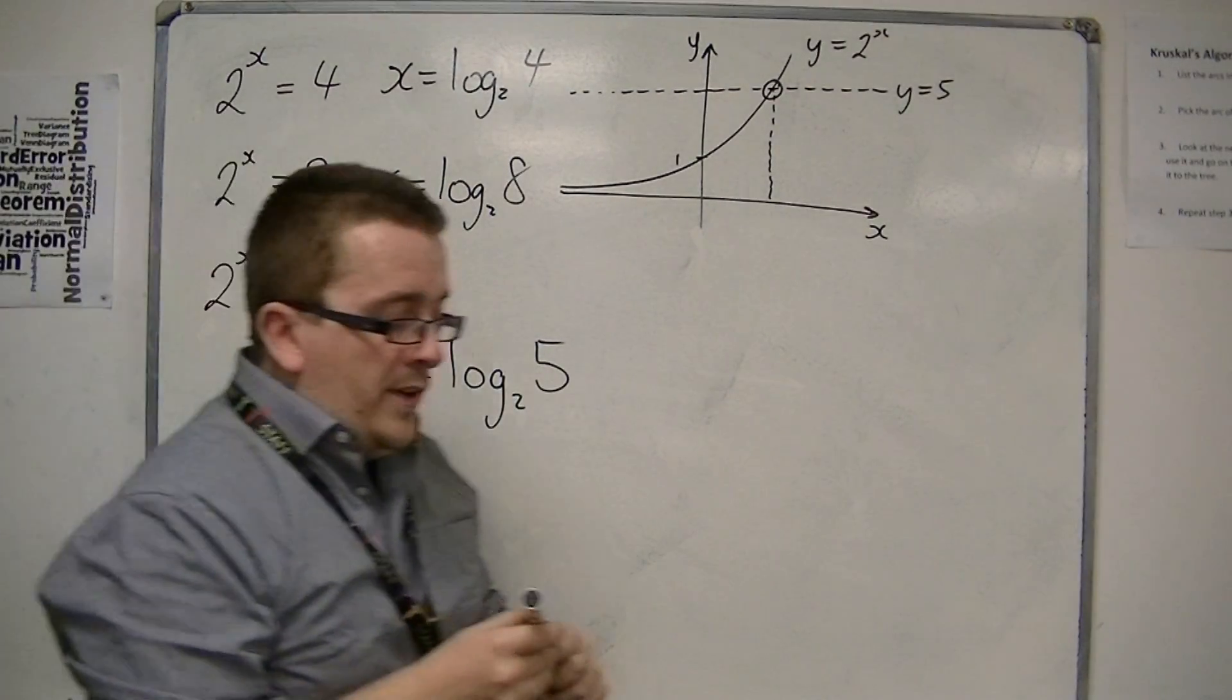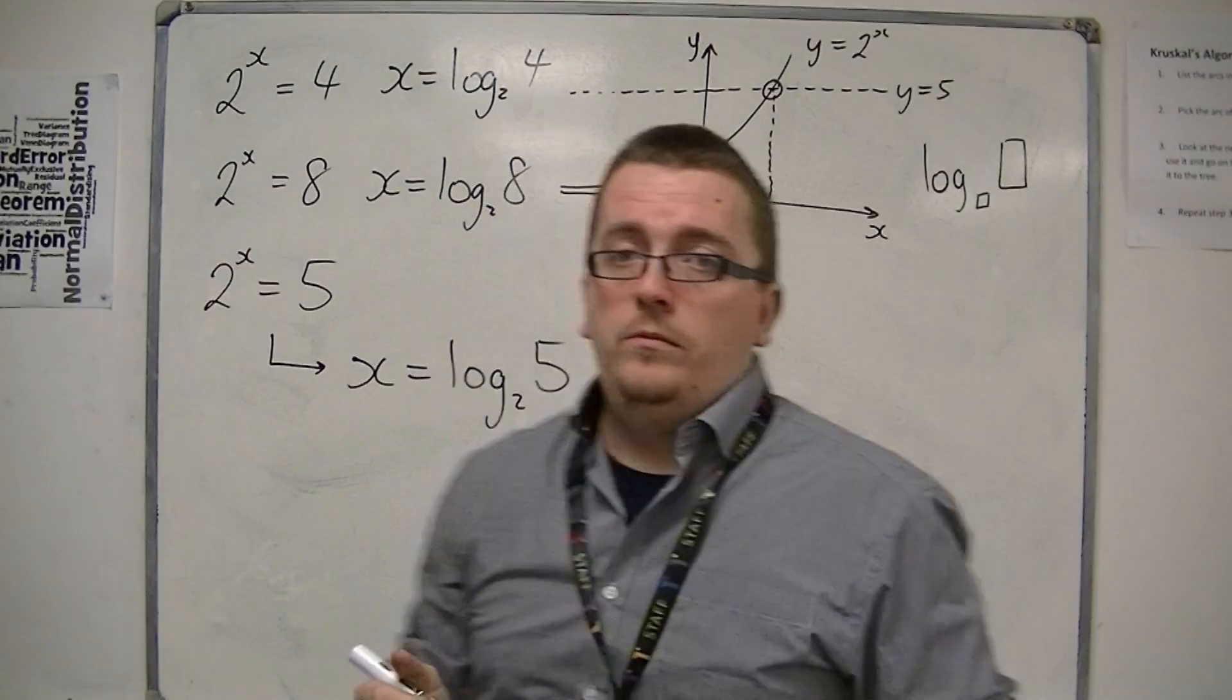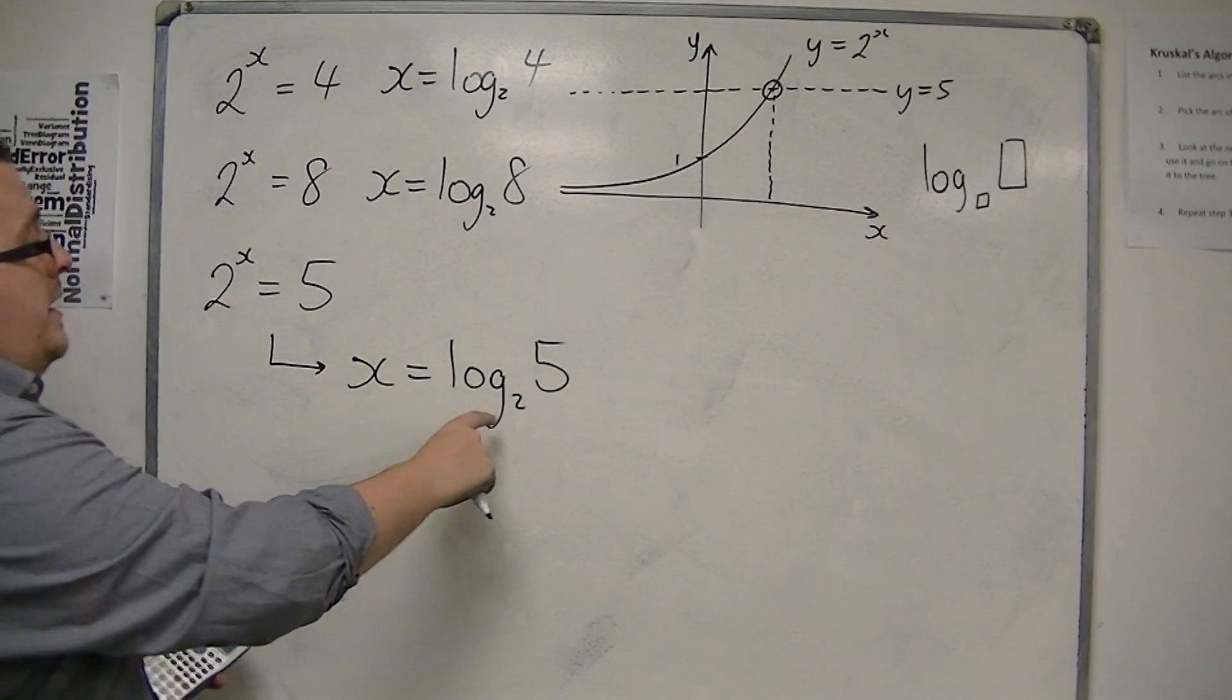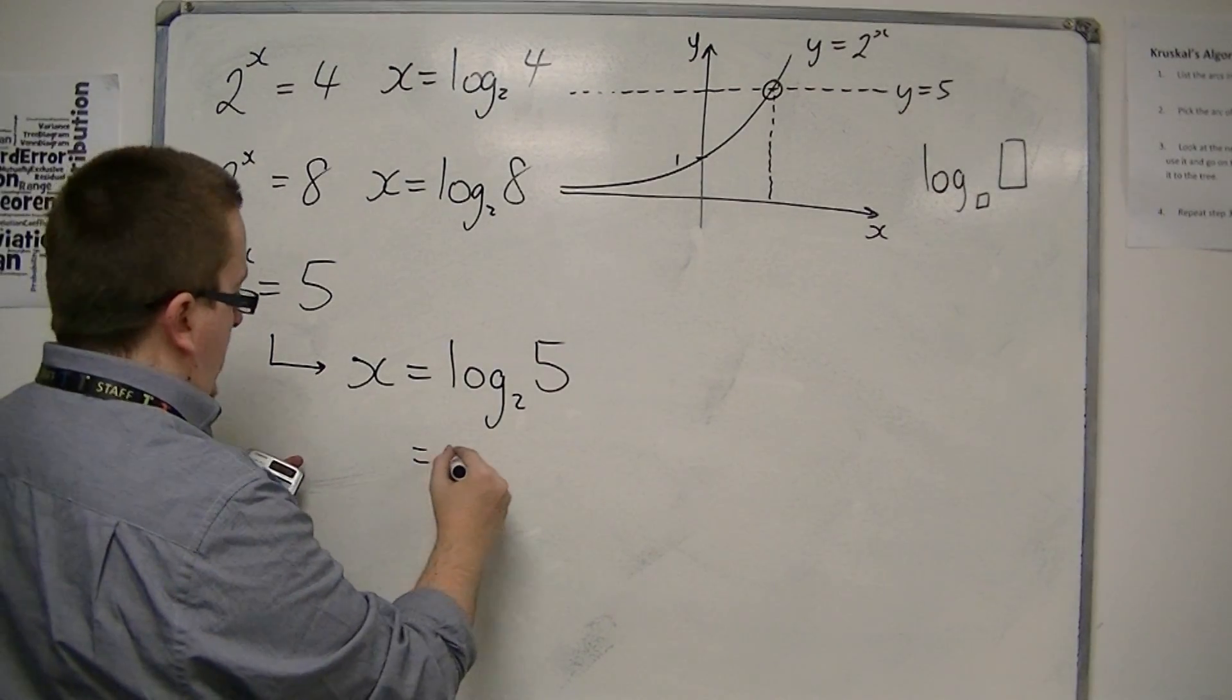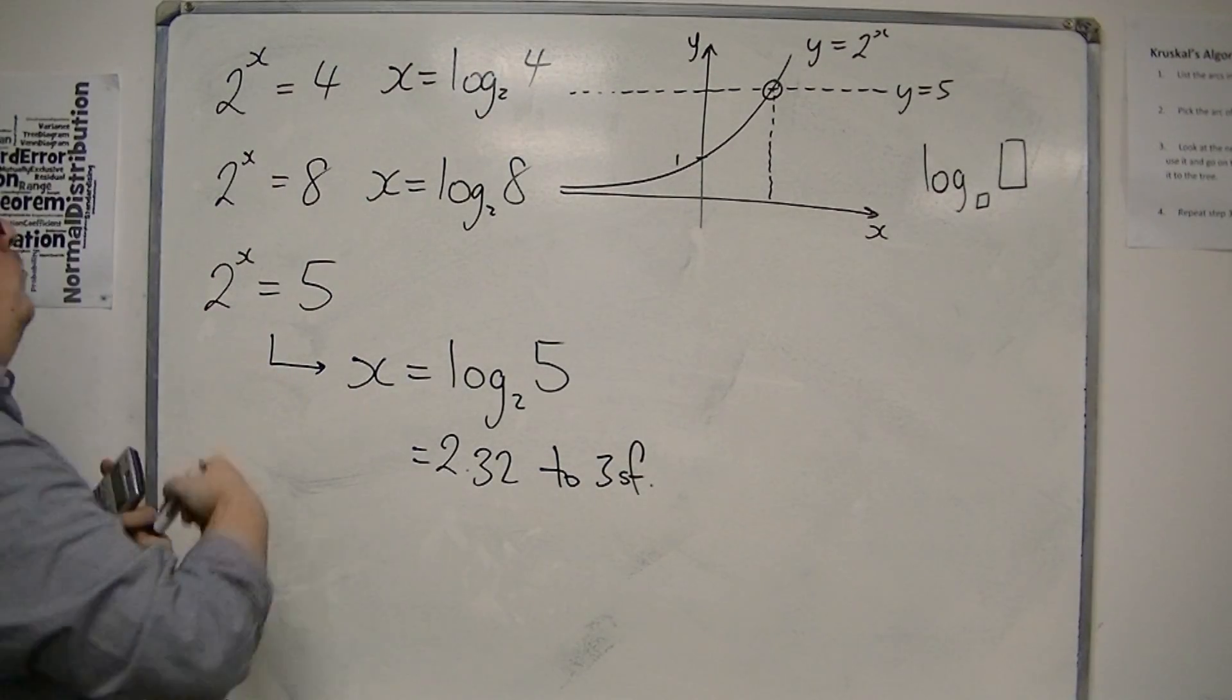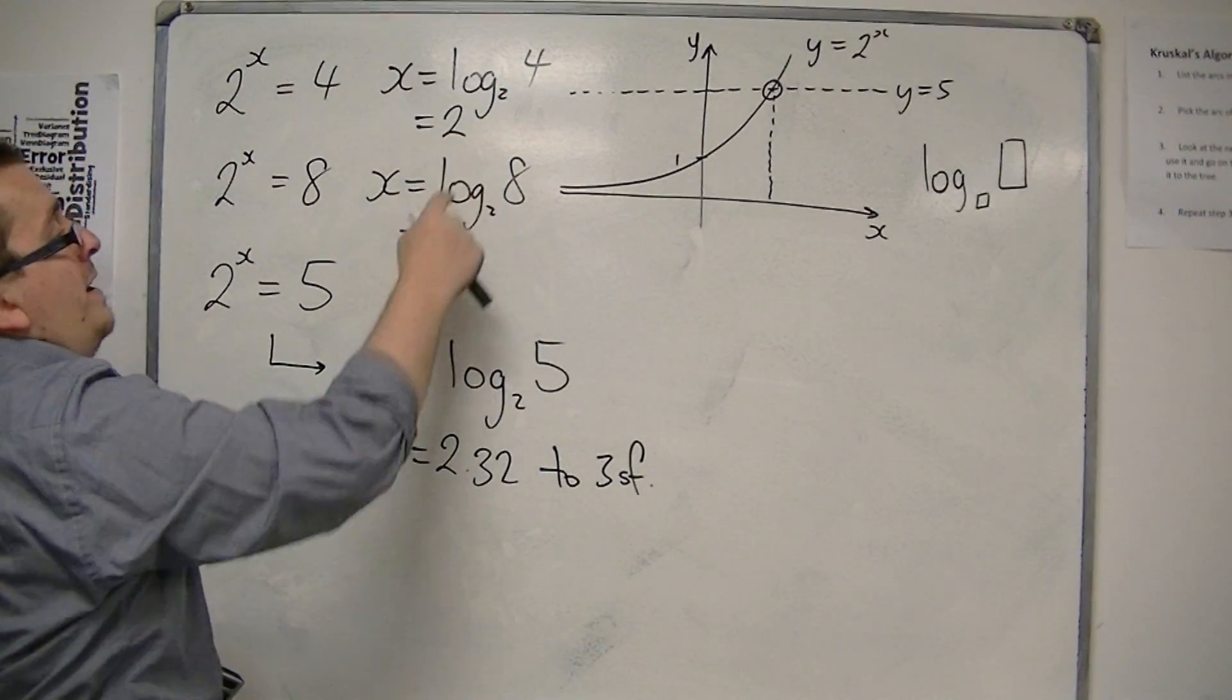And if you have a calculator that has a button that looks like this, then you're going to be laughing, that's brilliant. Because then you can just type in, press that button, which for a Casio is in the top right. Then you can plug in 2, and then 5, and then you should be able to get 2.321928095, 2.32 to 3 significant figures. So we thought it would be somewhere between 2 and 3, and it is. So you might want to just try and plug those into your calculator, and make sure you get 2 and 3.